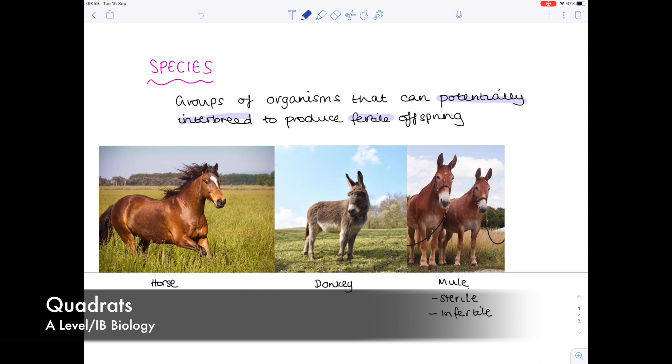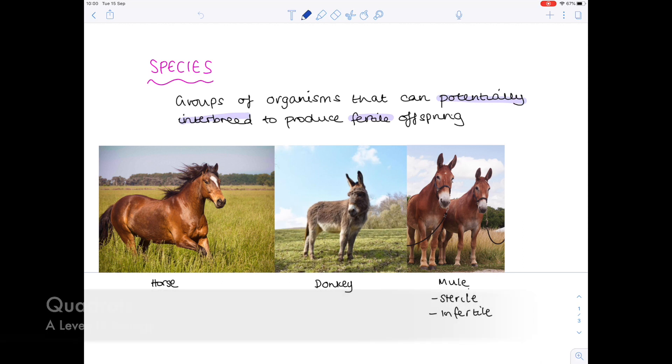In this A-level IB biology video we're going to be looking at the relationships between different species, and how you can sample those species using a quadrat, which I'll discuss later in the video.